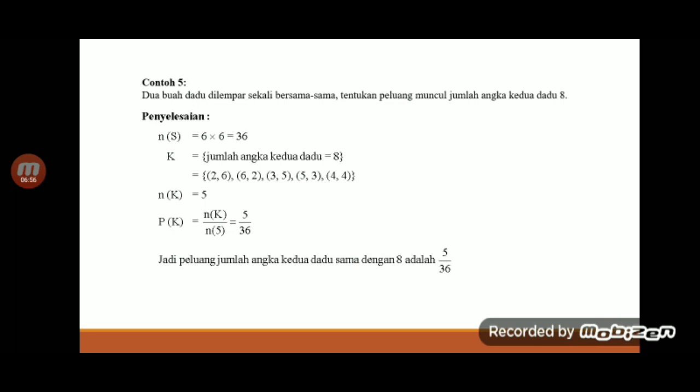Sedangkan kejadiannya itu adalah jumlah angka kedua dadu sama dengan 8. Berarti 2,6, 6,2, 3,5, 5,3, dan 4,4. Berarti dijumlahkan ada 5. Peluang itu sama dengan ruang kejadian dibagi ruang sampel, berarti 5 dibagi 36.